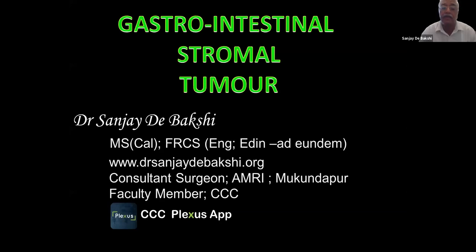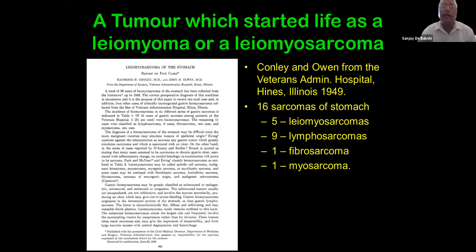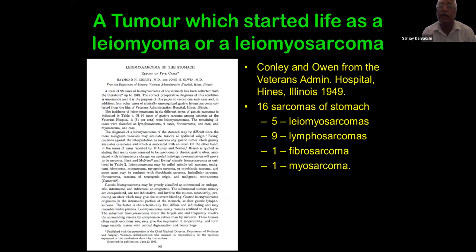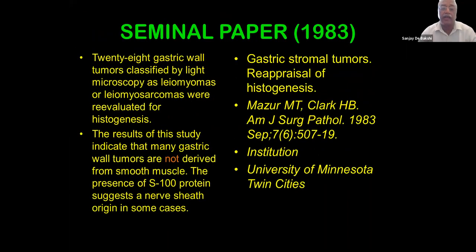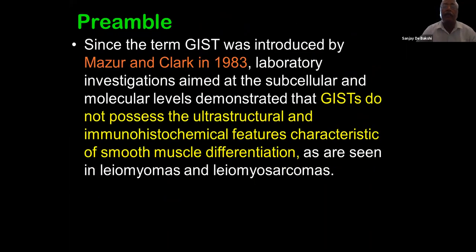My brief today is to talk about gastrointestinal stromal tumors. This is a tumor which started life classified as a leiomyoma or leiomyosarcoma. Back in 1949, Conley and Owen from the Veterans Administration Hospital in Illinois reported on 16 sarcomas of the stomach: five leiomyosarcomas, nine lymphosarcomas, one fibrosarcoma, one myosarcoma. Our knowledge has changed enormously since then. The term GIST was introduced by Mazur and Clark in 1983.